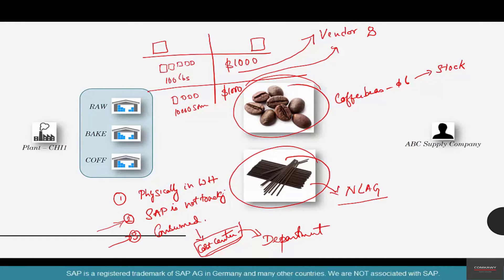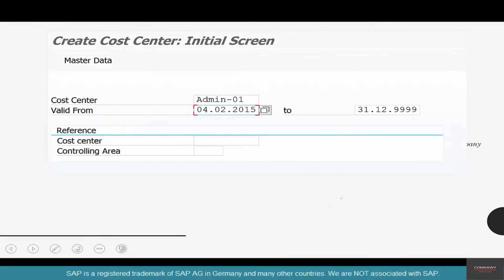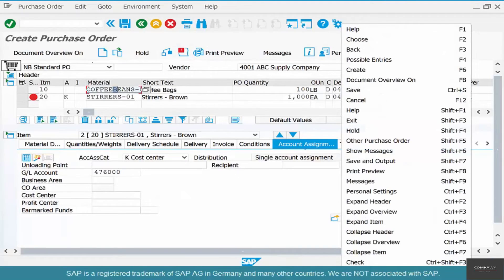What departments does a coffee shop have? A marketing department, a production department making cakes and pastries, an HR department taking care of employees, and a finance department. Each department incurs some costs. For example, the HR department might need paper for printing — paper is a cost the HR department incurs, and purchase orders for paper will be charged against the HR cost center.